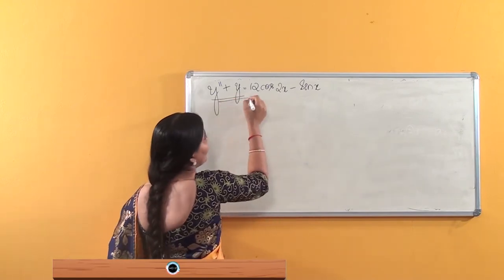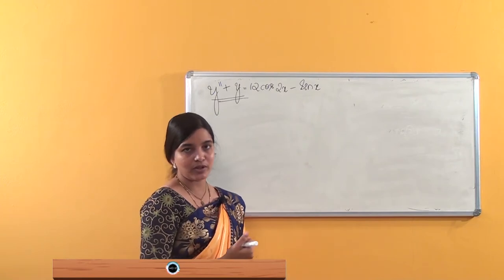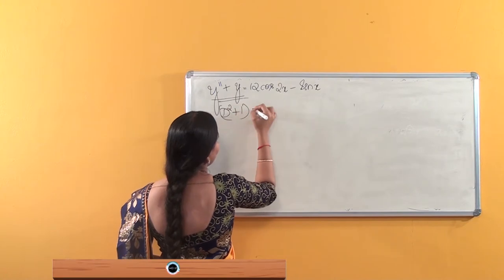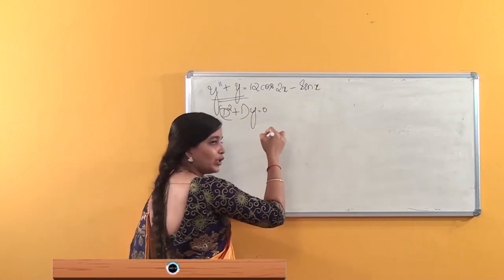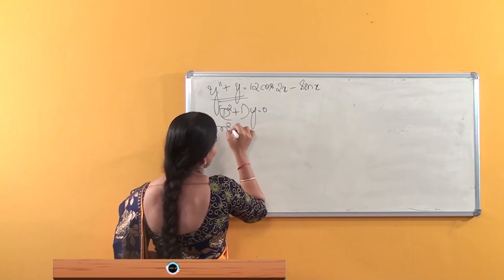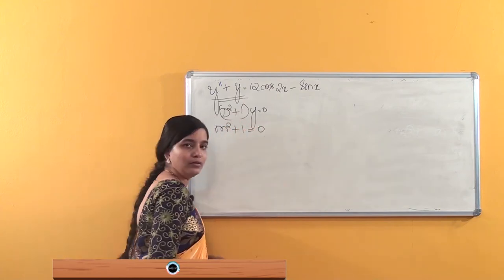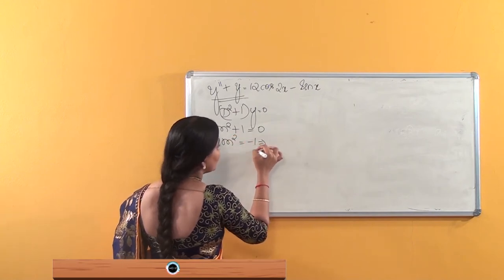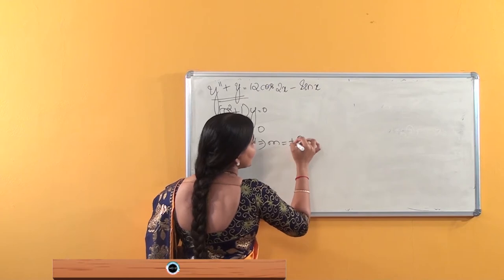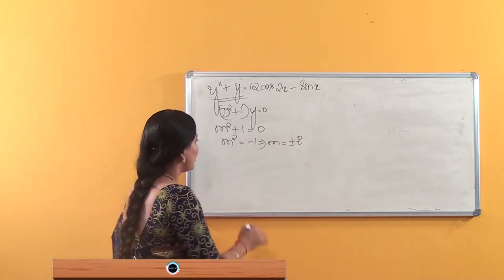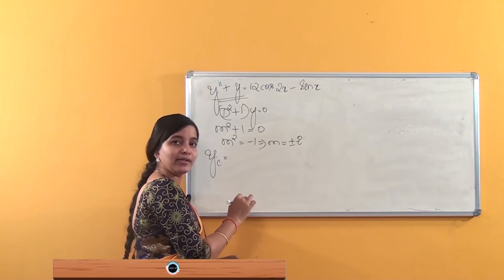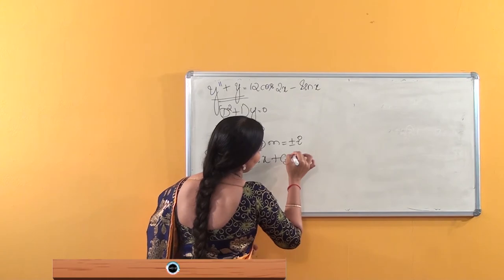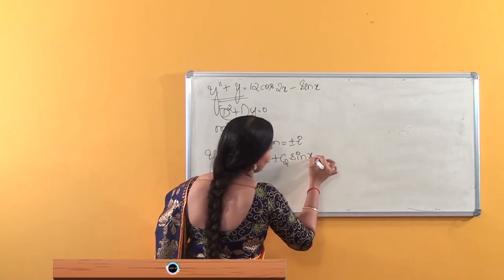For the complementary solution, the auxiliary equation is must. I can write it as M² + 1 = 0. So M² = −1, which implies M = ±i. Therefore, our complementary solution is Yc = C1·cosx + C2·sinx.